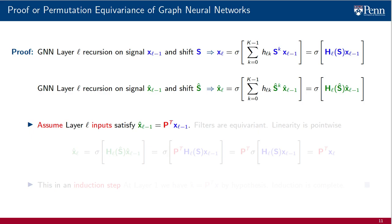Proceed now to make the induction hypothesis that at layer l the inputs are permutations of each other, related by p-transpose. Write down the output of layer l on the GNN that uses shift operator s-hat. The perceptron involves the filter h_l applied to signal x-hat. Given that the filter is permutation equivariant, which we have proven before, and that we are assuming by induction hypothesis that the inputs are permutations of each other, it follows that the output of this filter can be written as a permutation of the output of the filter h_l applied to signal x_{l-1}. We have switched to the other GNN.